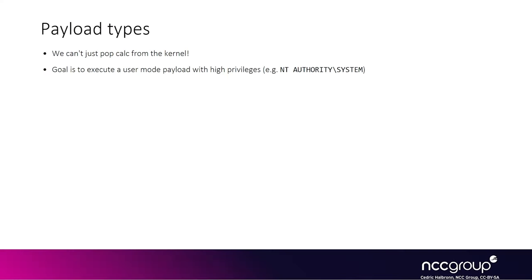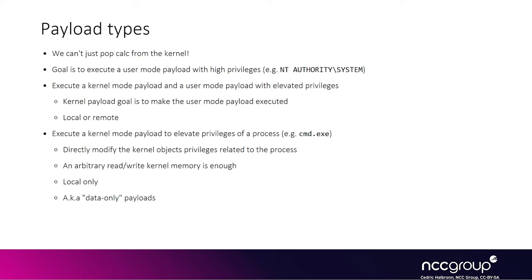Typically when we have kernel privileges, we can't really start a new process with high privileges directly from the kernel. But because we have the highest privileges possible in the kernel, we can do less privileged actions, and so the idea is to migrate and execute a userland payload with NT AUTHORITY\SYSTEM privileges. You have two ways to execute code in high privileged userland processes: if you already have kernel mode code execution, you can call APIs or use certain tricks to inject code into existing userland processes with high privileges.